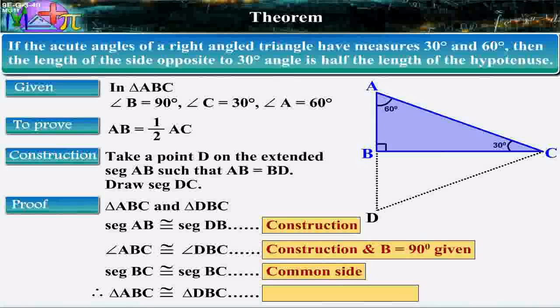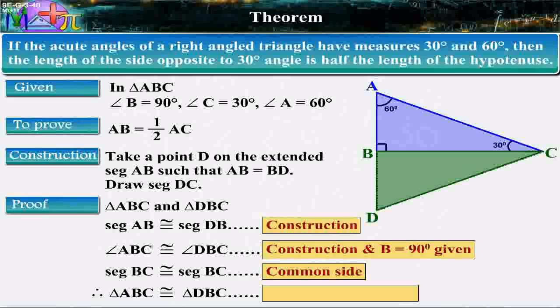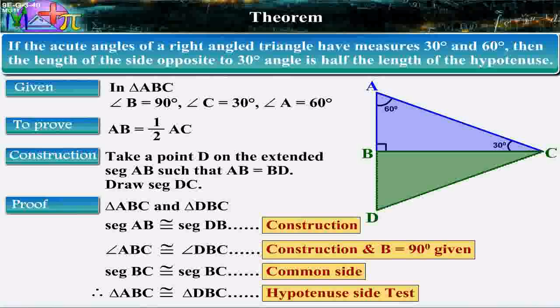Therefore, triangle ABC is congruent to triangle DBC by hypotenuse side test.